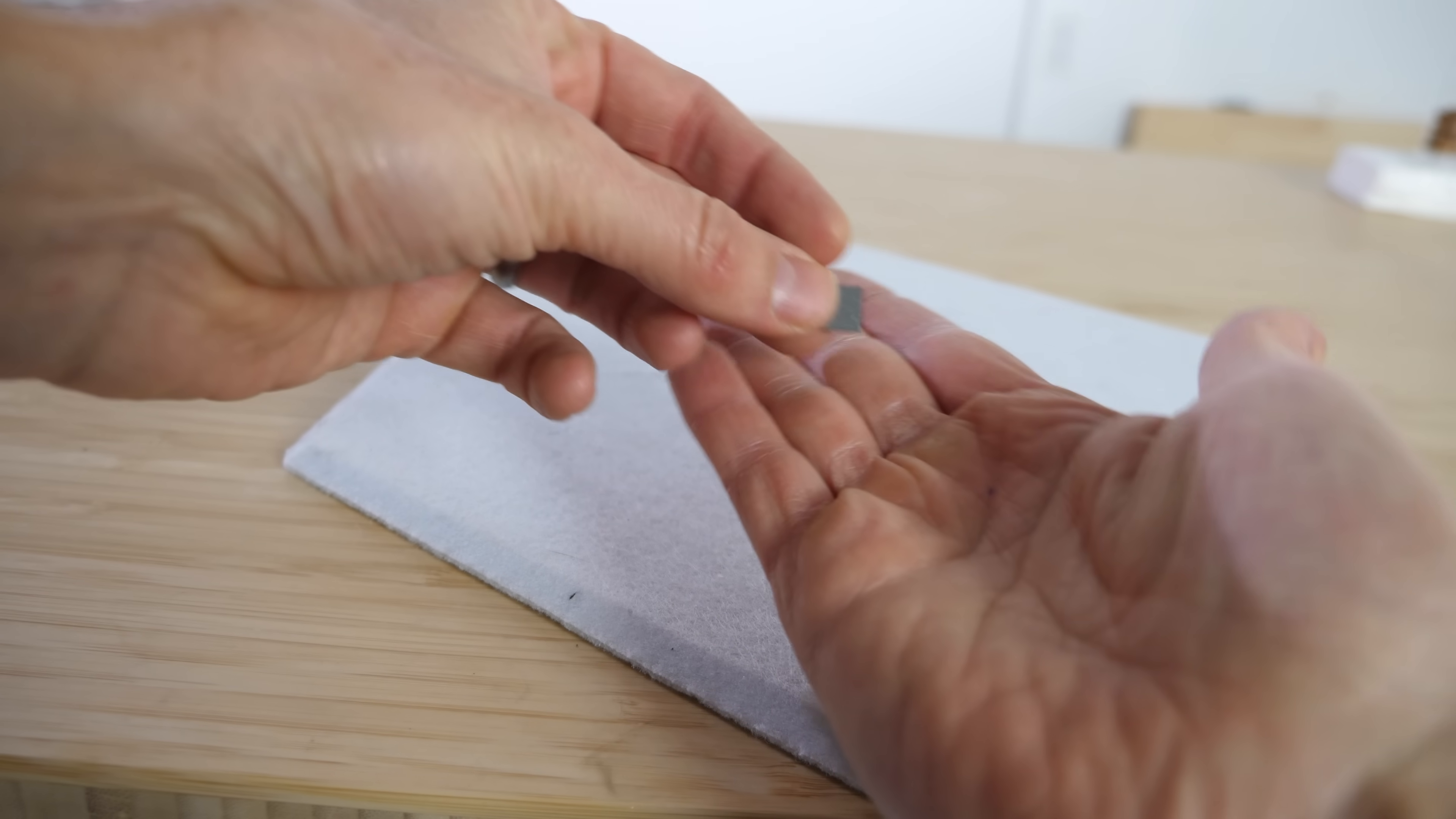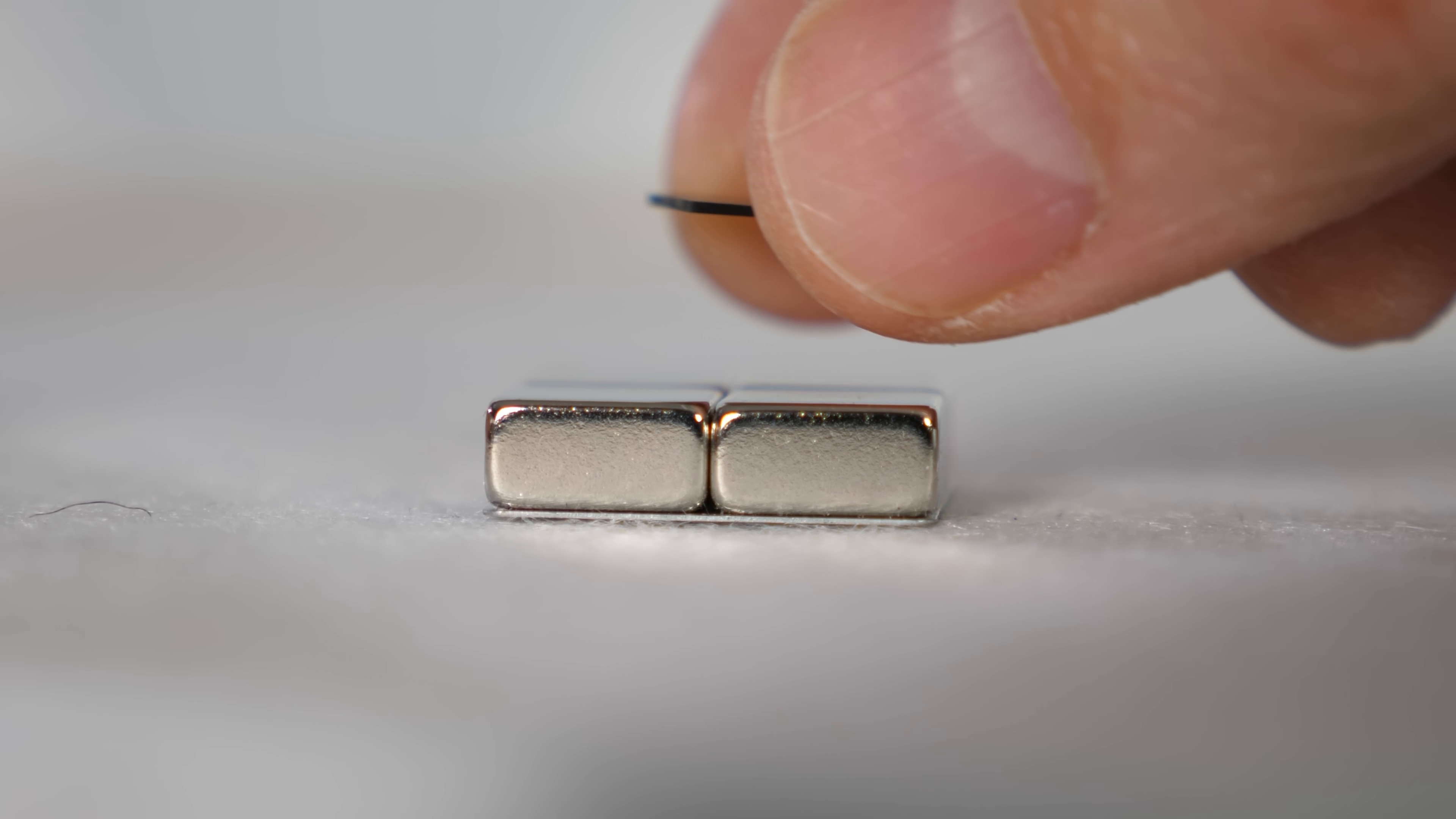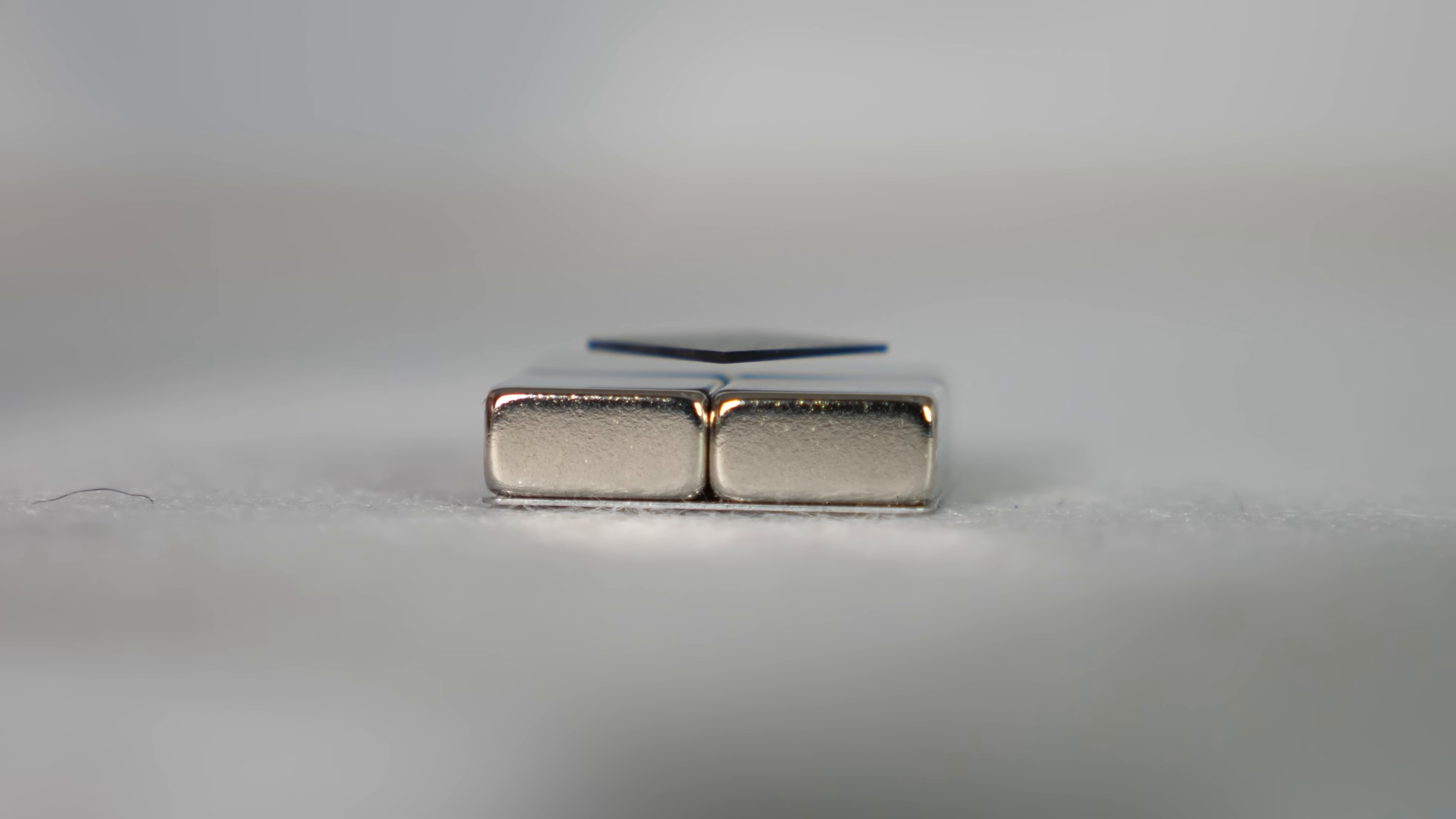Let's start with a material you may have seen before, pyrolytic graphite. It can levitate above magnets because the repelling force is strong enough to counteract gravity.